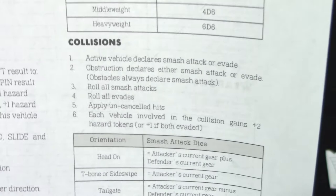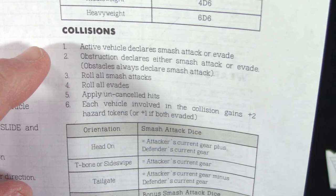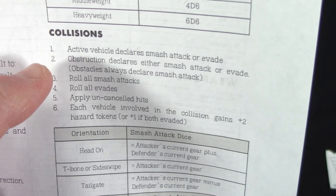You're going to go through this sequence: the active vehicle declares whether it wants to smash into the obstacle or vehicle or evade. The obstruction or thing getting hit can do a smash attack back or evade.